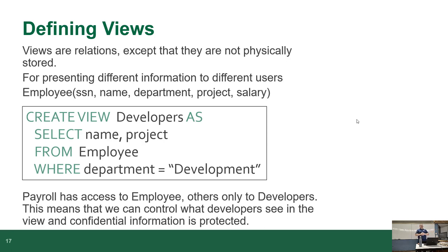For example, a developers view would be set up so that developers only see employees in the development department. SELECT * FROM developers would only return employees in that department. But SELECT * FROM employee still returns everything. Other uses I've seen over the years: hiding really complicated queries in a view so that simpler applications can just SELECT from the view as if it were a table.